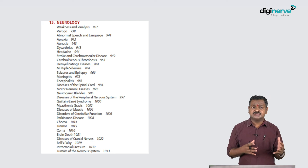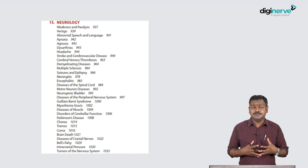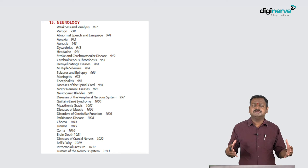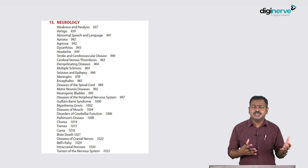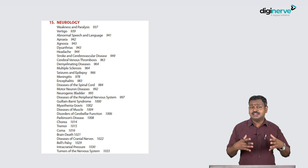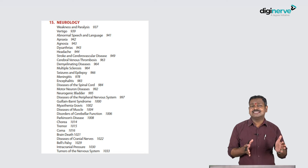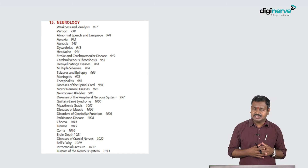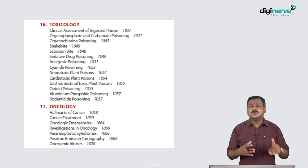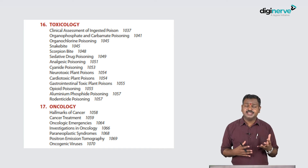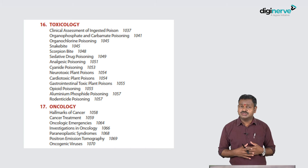Neurology is a very important section. It includes stroke, movement disorders, epilepsy, headache, demyelinating disease, spinal cord disease, and neuropathies. The nervous system provides long cases in almost all centers - stroke or spinal cord disease is commonly kept. It is a very interesting section, practically important for both practical exams and theory, with a large number of questions asked.